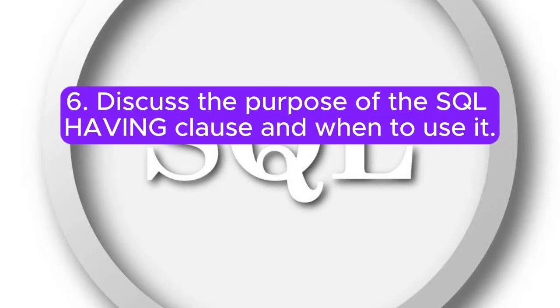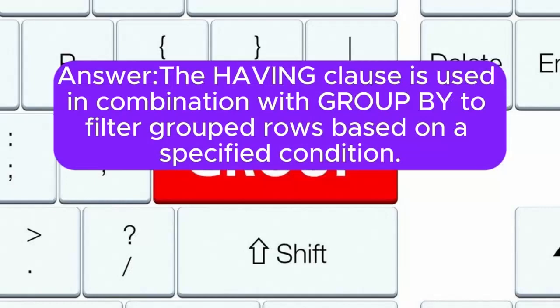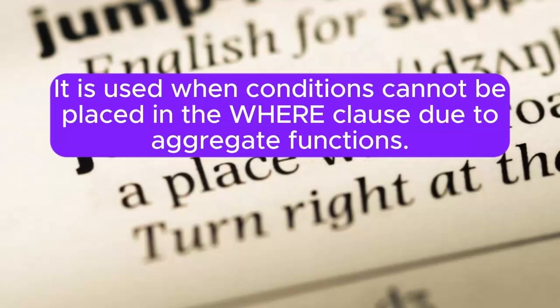Question 6: Discuss the purpose of the SQL having clause, and when to use it. Answer: The having clause is used in combination with group by to filter grouped rows based on a specified condition. It is used when conditions cannot be placed in the WHERE clause due to aggregate functions.